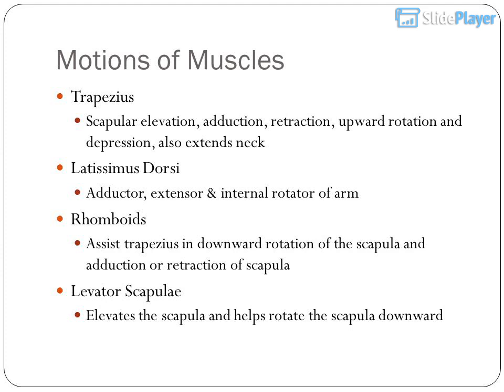Rhomboids assist the trapezius in downward rotation of the scapula and adduction or retraction of the scapula. Levator scapulae elevates the scapula and helps rotate the scapula downward.